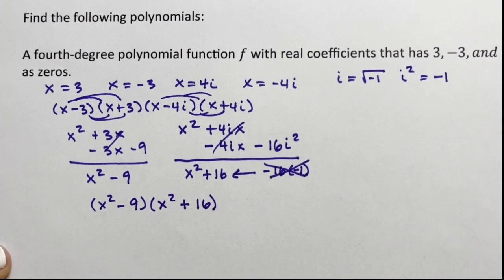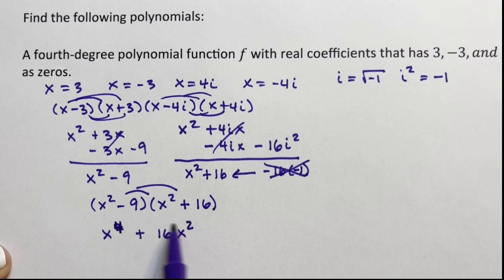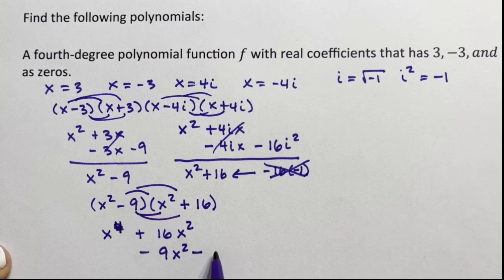So I have (x² - 9)(x² + 16). Now I just need to multiply those. I'm still only multiplying binomials, which is why this problem is so lovely. So I'm going to distribute the x². That gives x⁴ + 16x² - 9x² - 144.